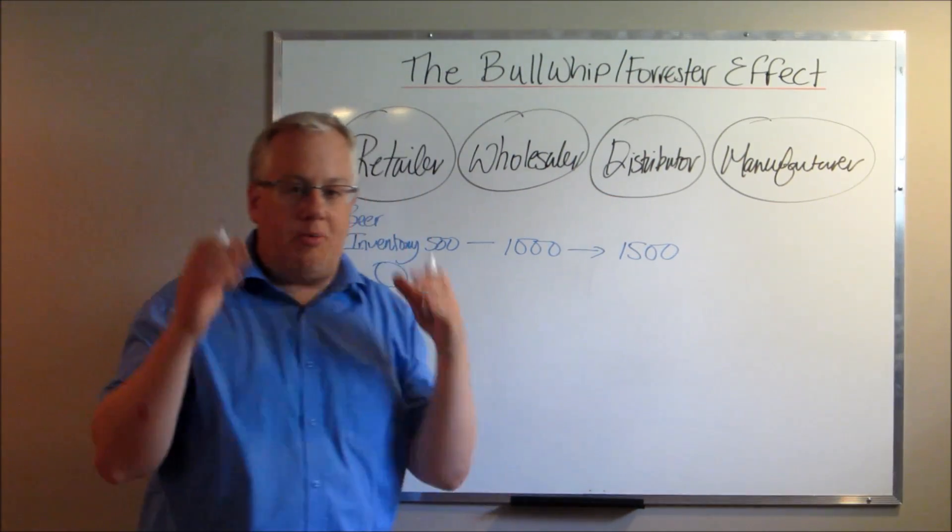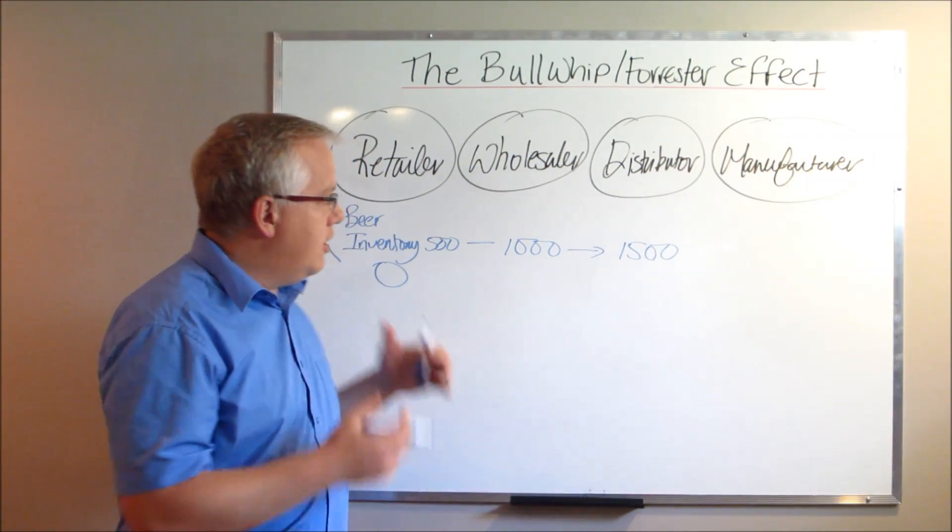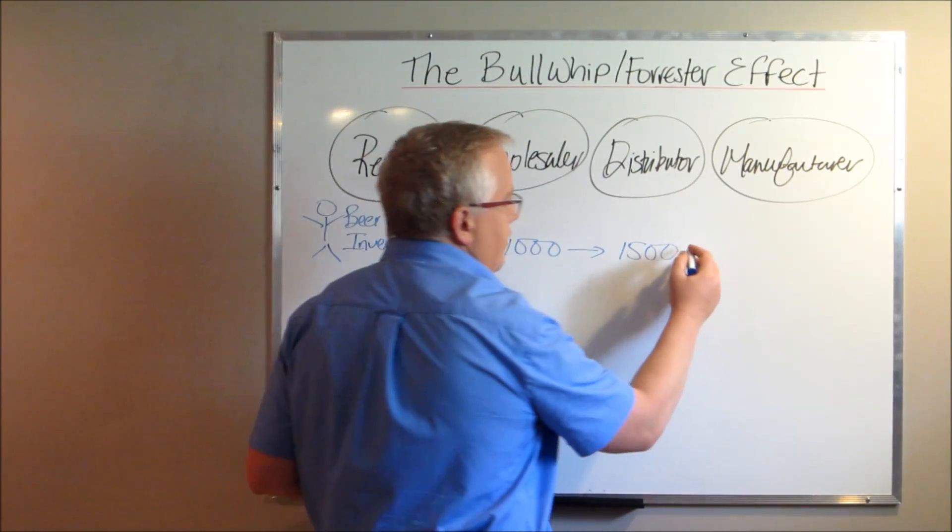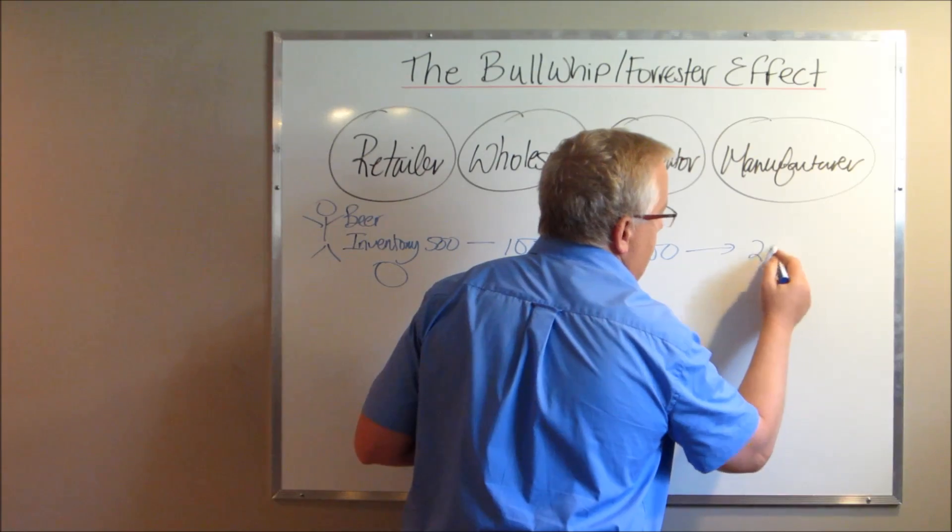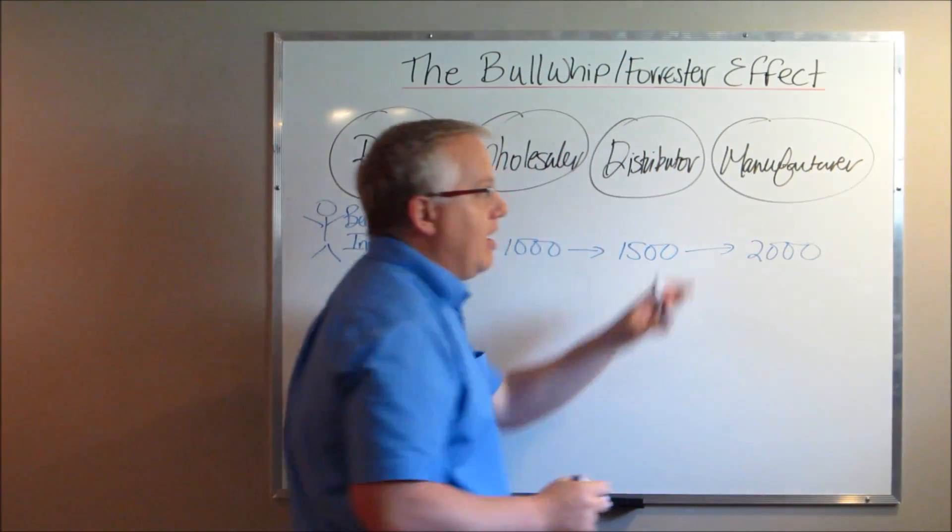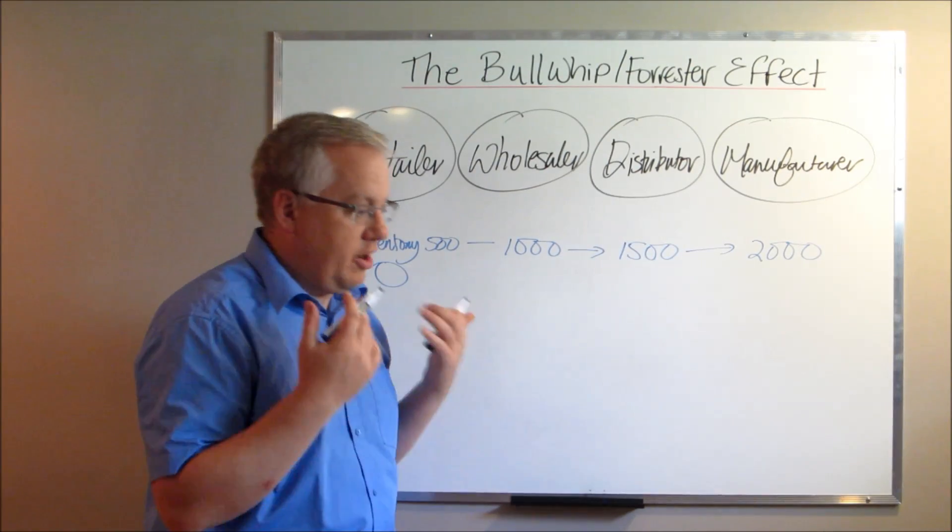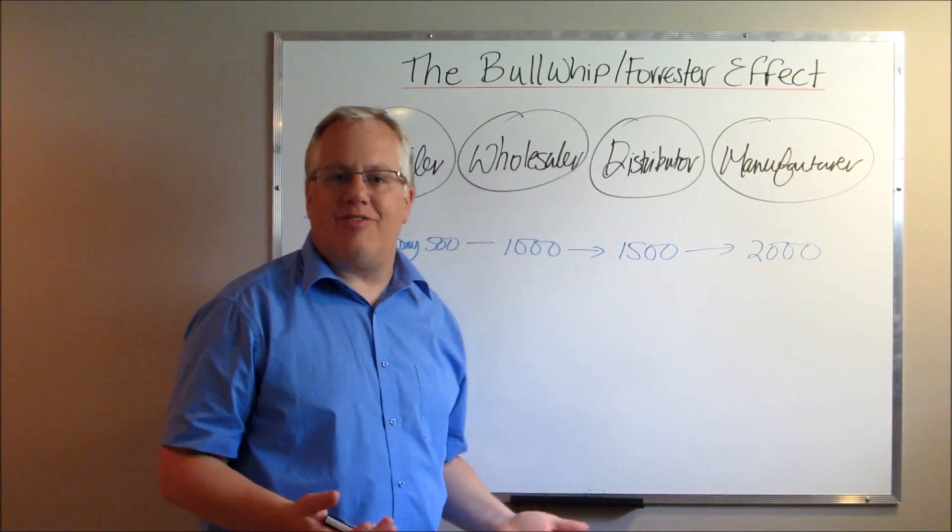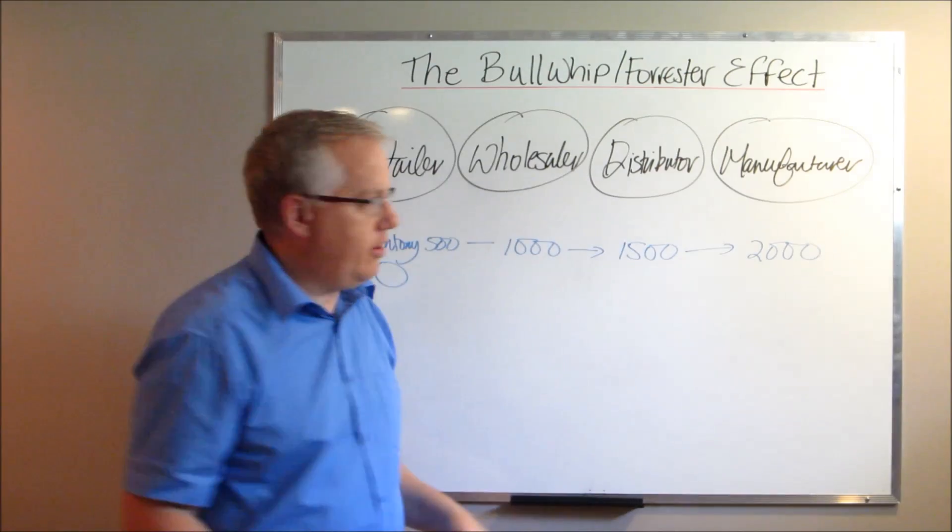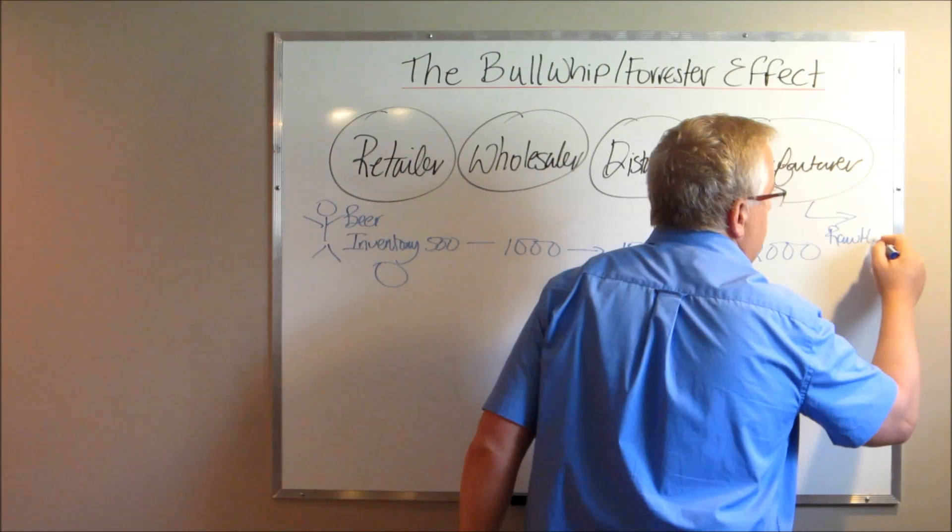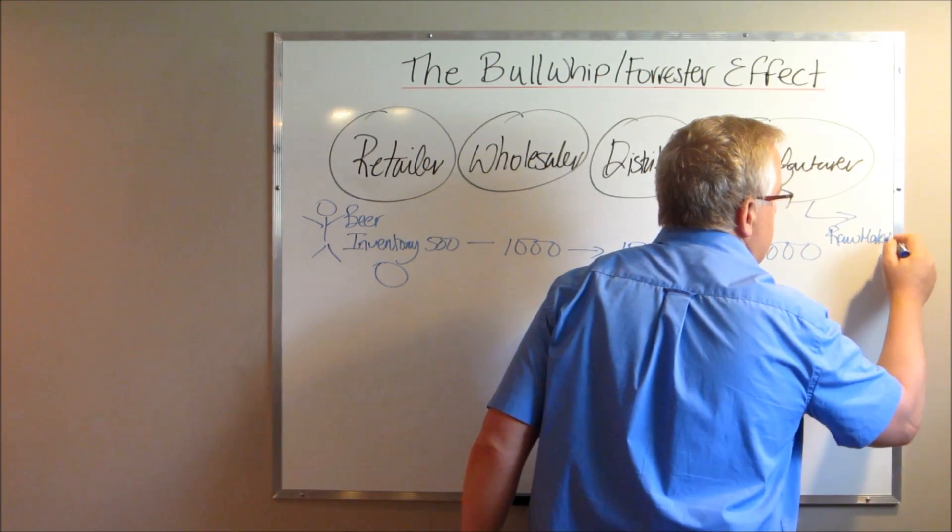Now, the distributor sees that and they think, oh my God, this is fantastic. This is great. Huge demand. Now we're going to have to buy more from the manufacturer. So they go over to the manufacturer and they place an order for 2,000. Now the manufacturer turns around and says, this is phenomenal. This is fantastic. Increased demand. We're going to have to buy even more raw materials. So they place an even larger order for raw materials in order to match this demand.